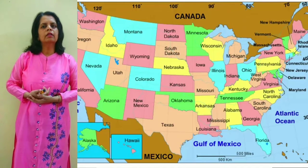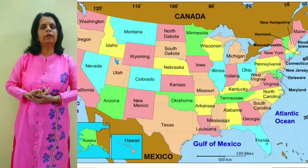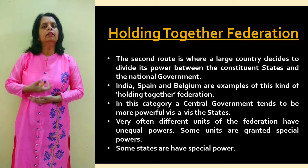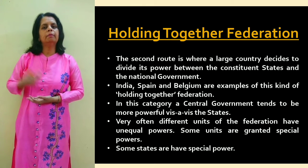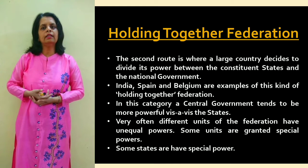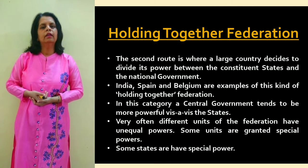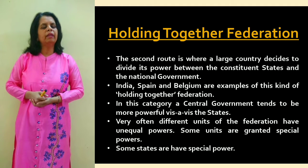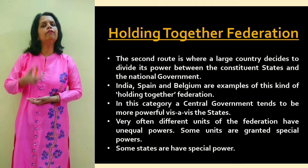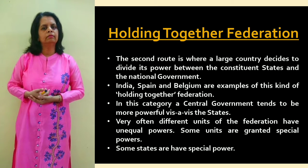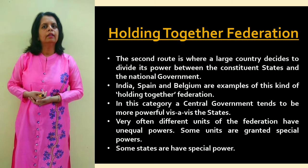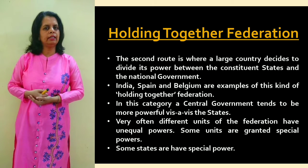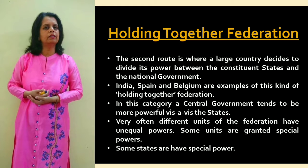Apart from that, the next type is called 'holding together' federation. Here the country decides to divide power between the constituent states and the regional government. In this type of federation, the central government is more powerful. Different constituent units might also have unequal power, like in the case of India, where the central government is more powerful compared to the states.